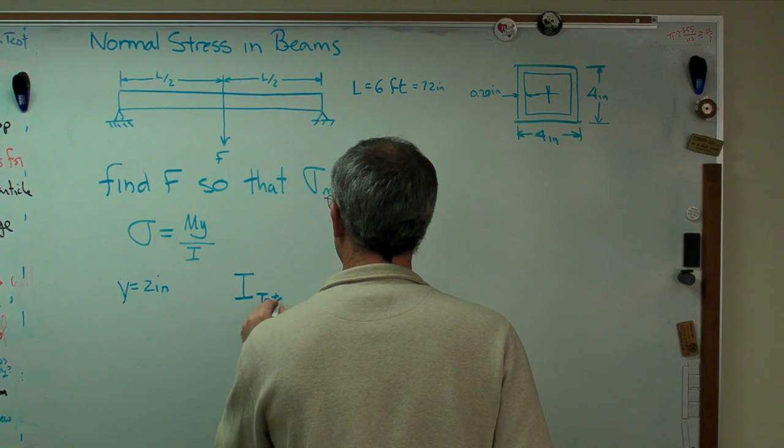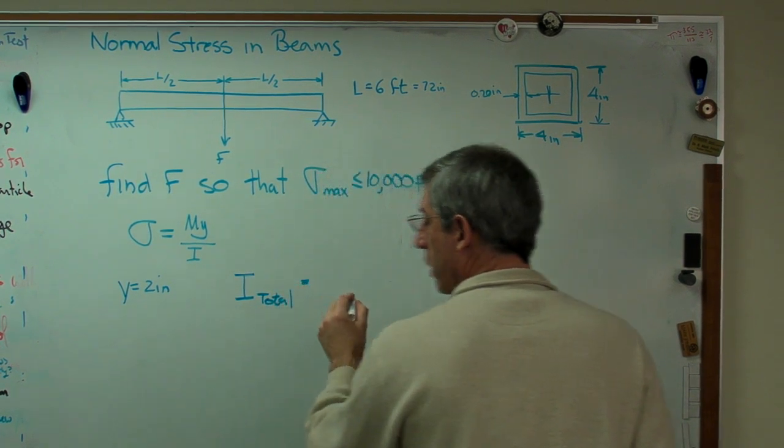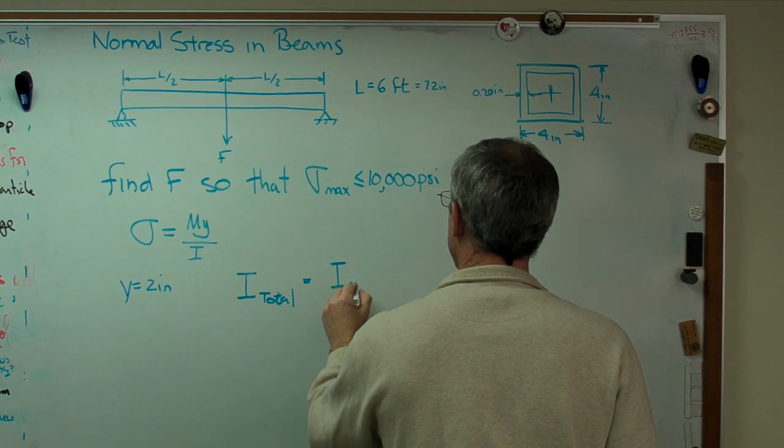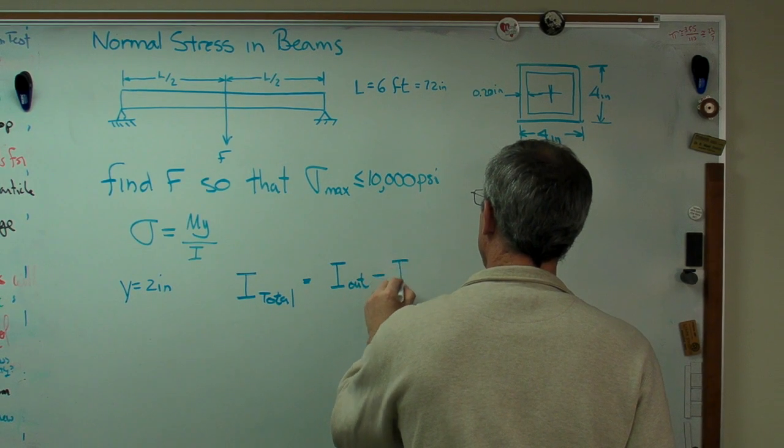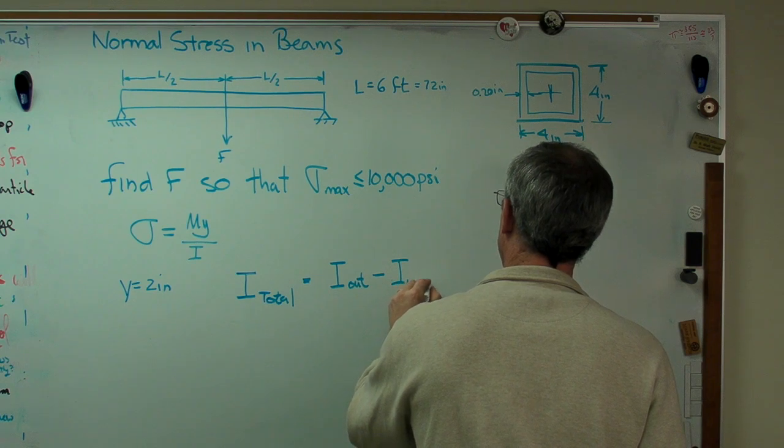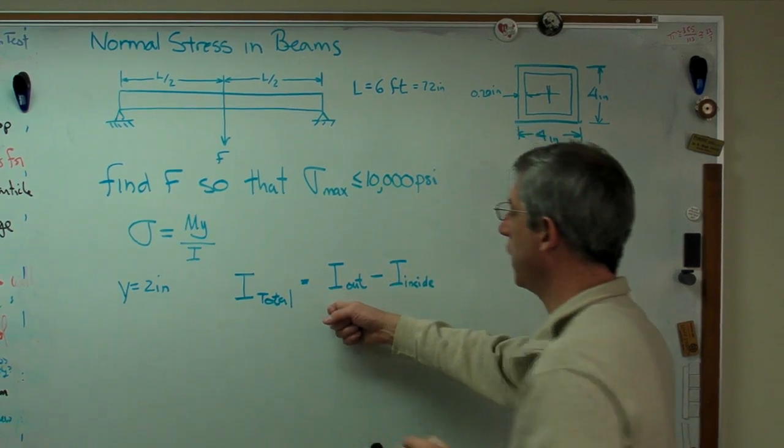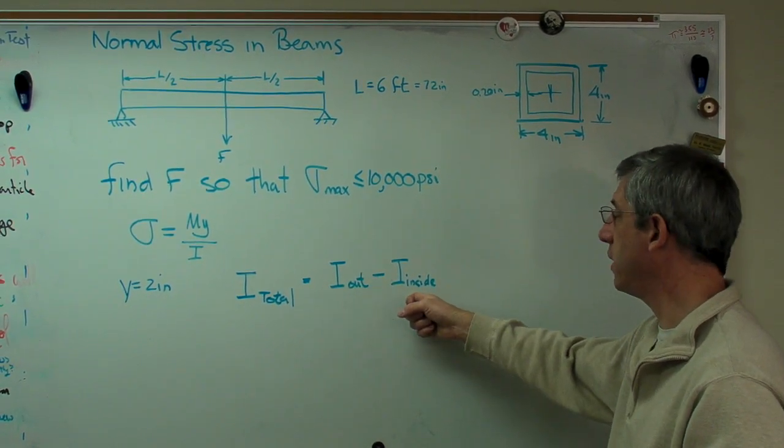We can treat this inner hollow part as a negative area, and it works fine. It's easier to do that way, so that's how I'm going to do it. I'll call it I total here for right now. That equals I of the outside minus I of the inside.